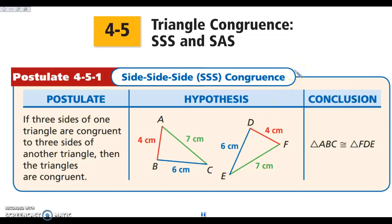Today we're going to get some shortcuts for that. The first of those shortcuts is what we call Side-Side-Side. So instead of saying that every pair of sides and every pair of angles are congruent, here we can just prove that every pair of sides are congruent. We don't have to know anything about any of the angles, and if we can show that all three pairs of sides are congruent, that is enough to show that the triangles are congruent.